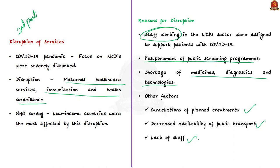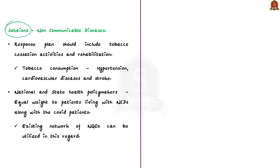The author lists important solutions to tackle the growing NCD burden. First, India's NCD response plan should include tobacco cessation activities and rehabilitation, since tobacco consumption is indisputably linked to hypertension, cardiovascular diseases, and stroke. Second, state and national health policy makers should draw up a road map giving equal weightage to patients living with NCDs alongside COVID patients, and the existing network of NGOs can be utilized.